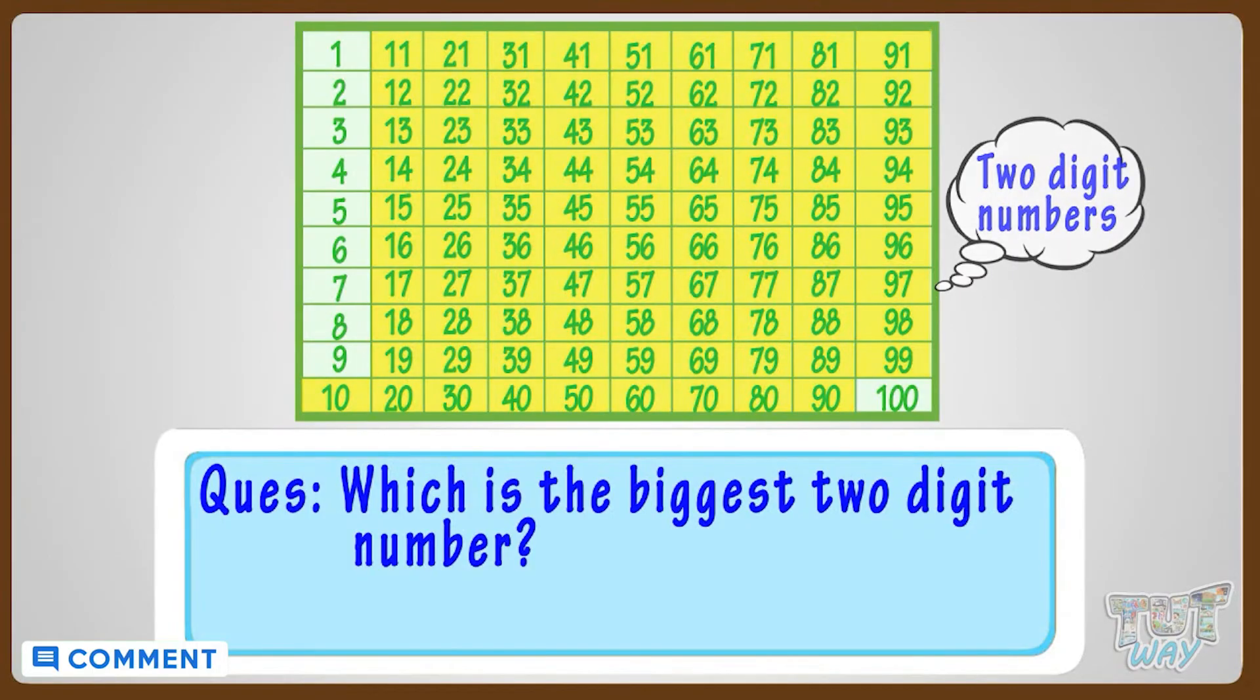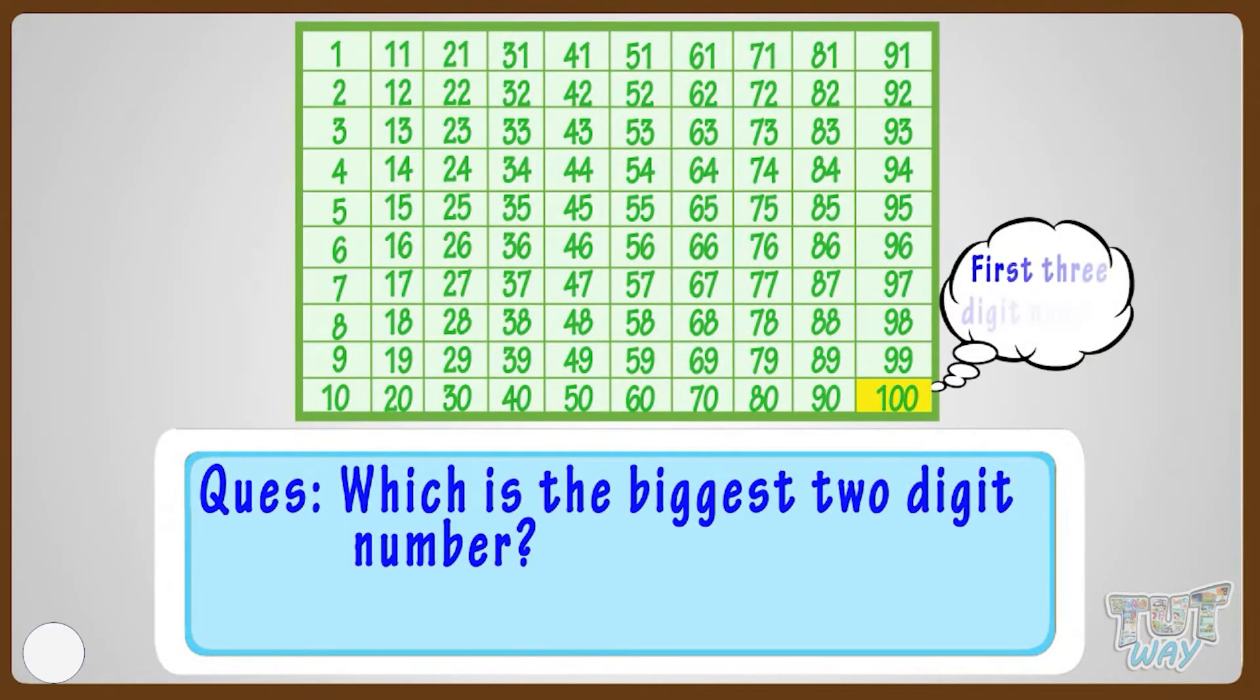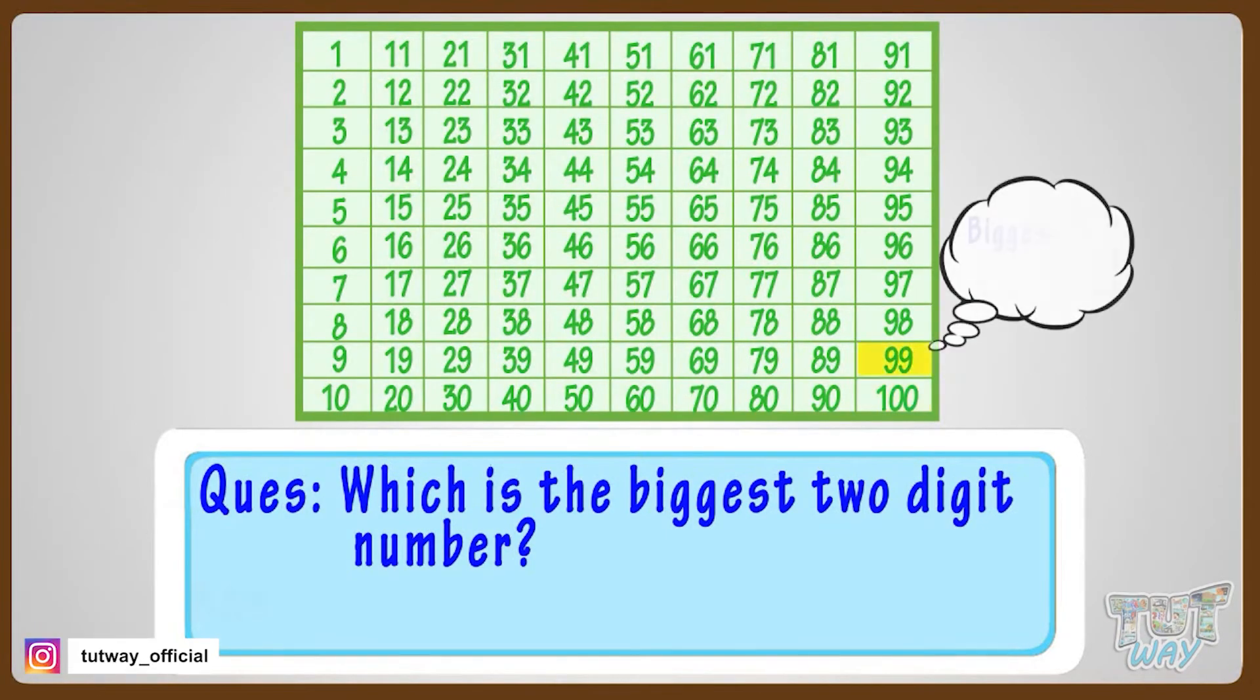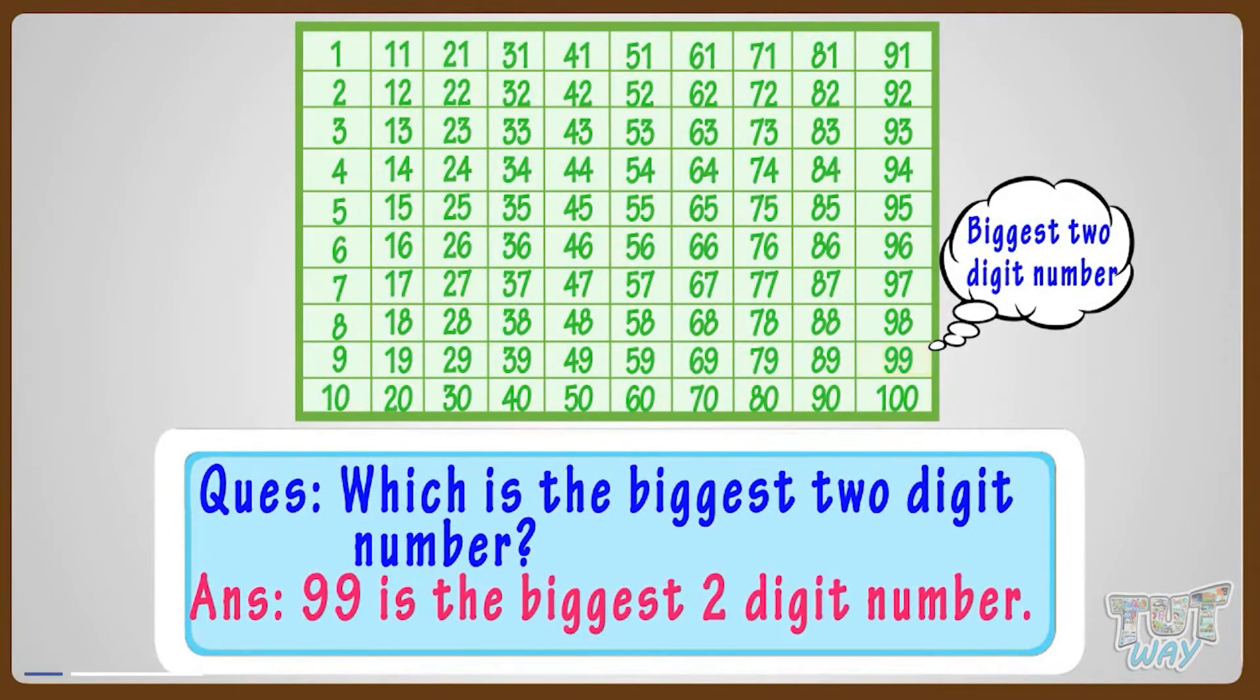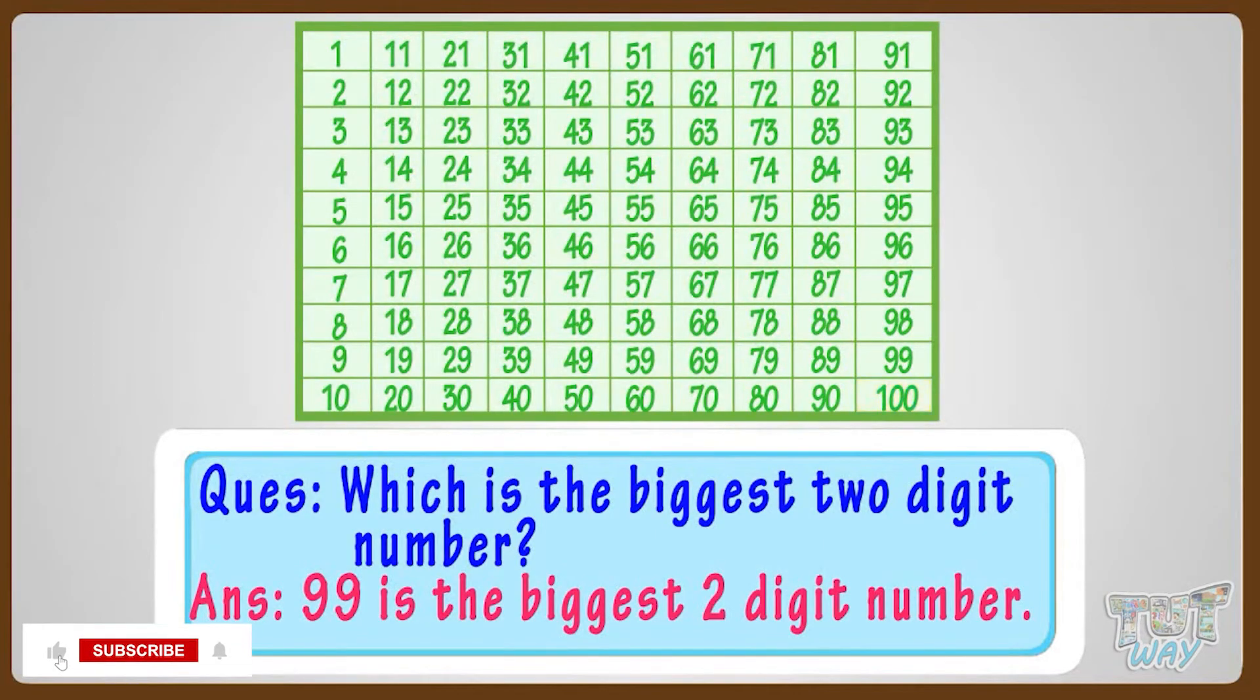As the next number is 100, which is a three-digit number. So, 99 is the biggest two-digit number. As the next number is 100, which is a three-digit number.